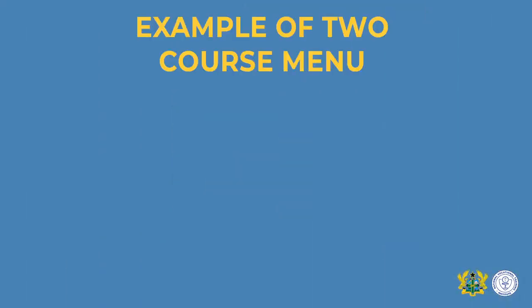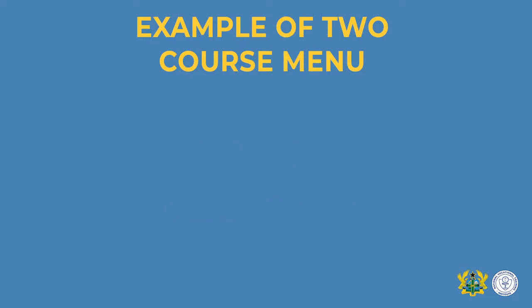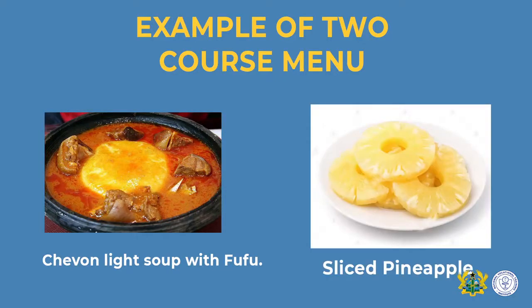Let's now look at examples of a menu. We will begin with a two-course menu. A two-course menu comprises of the main meal and a starter. A specific example is: Shivon light soup with fufu as the main meal, and sliced pineapple as the dessert.